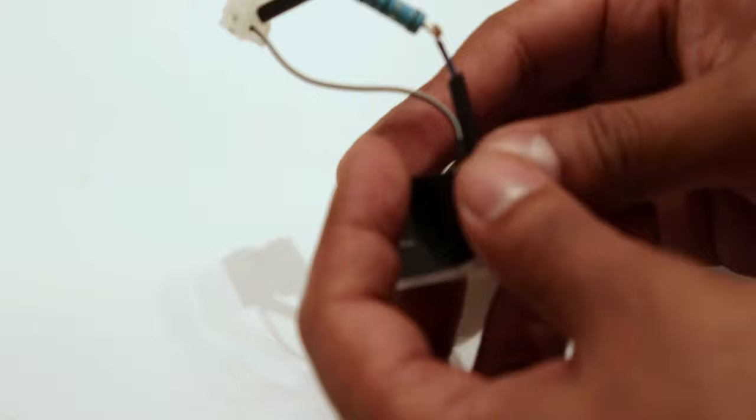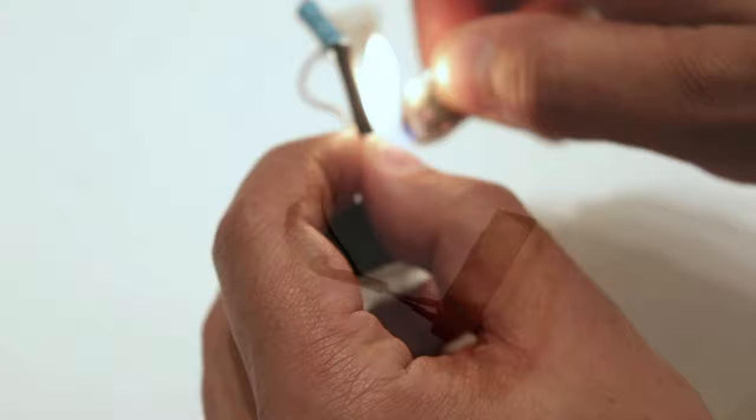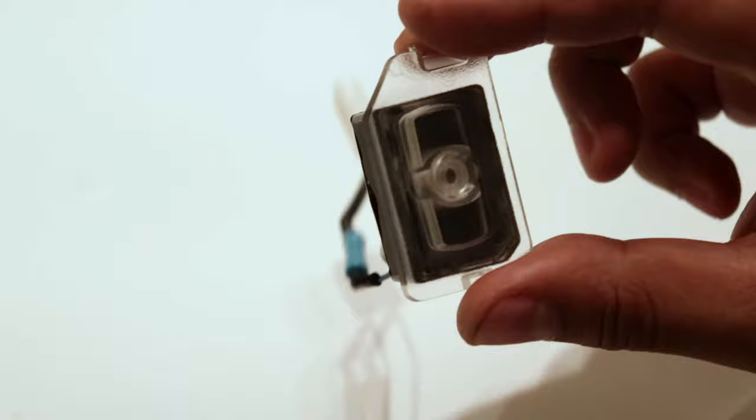And then I'm going to slide the shrink tube over the joints, heat it up, and shrink it down. That's it, now I can go ahead and install this on the car.